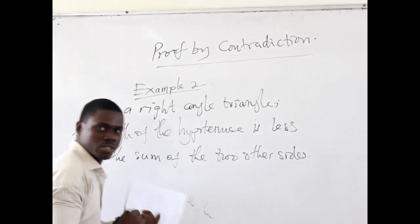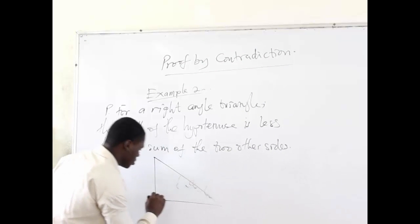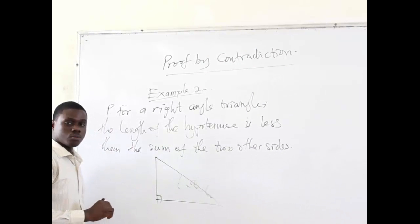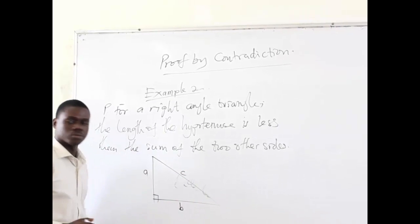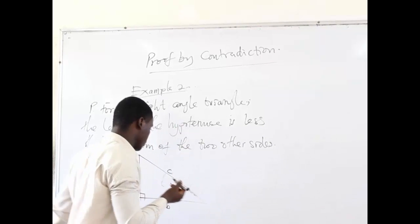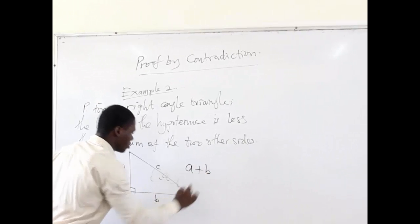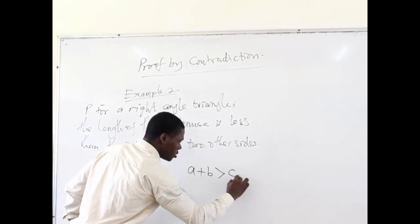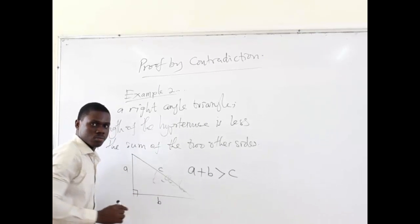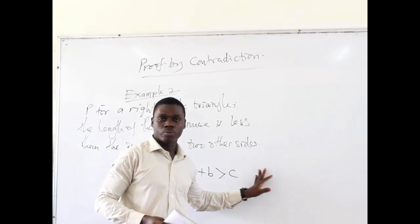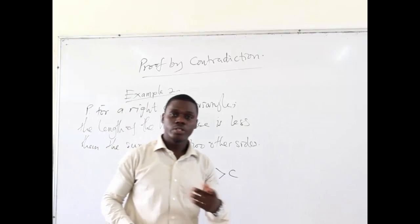Diagrammatically, what are we trying to see? We are trying to say that if we have a right triangle, with sides C, A, and B, then the statement is that A plus B is always going to be greater than C, where C is the hypotenuse and A and B are the other two sides. These are our propositions, or these are our hypotheses.